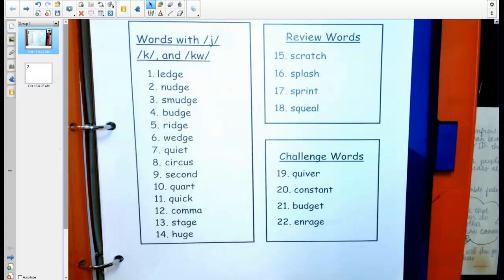Okay class, this is what we're going to do to practice our spelling words today. As you can see, I have the spelling words posted on the board. When you look up here at the top of the page where it says 'words with /j/, /dʒ/, and /kw/' when it has these forward slashes...